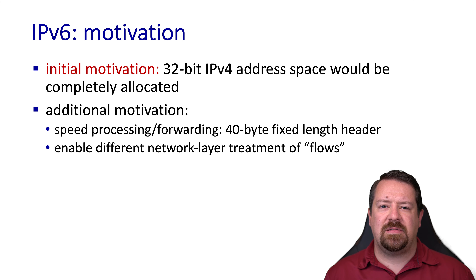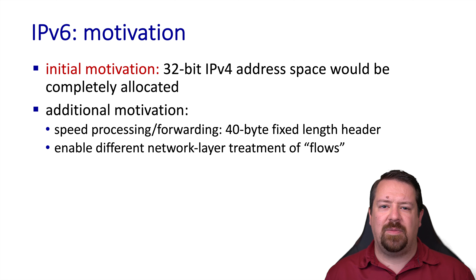Another goal was to pass the notion of flows down to the network layer. We've already discussed flows at the transport layer, where communication between a given source and destination port over a particular IP address pair constitutes a flow. However, a network layer device will not have visibility into the port numbers of the transport layer, but you might want to give it a notion of flows to allow for more intelligent packet queuing and forwarding decisions.